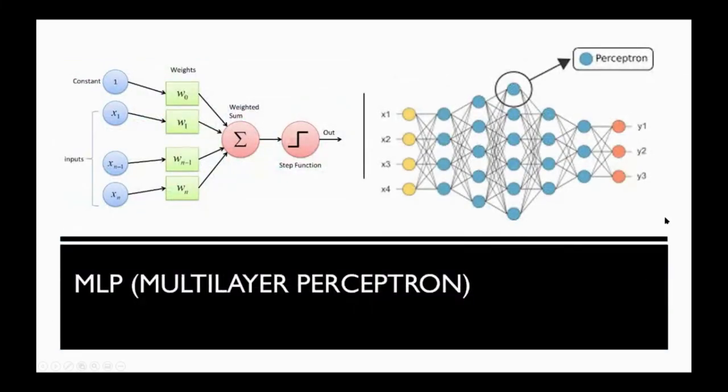Then we can make lots of perceptrons and make multi-layer neural networks. So when we have inputs, then each wire, each link has its own weight. So there are lots of weights.